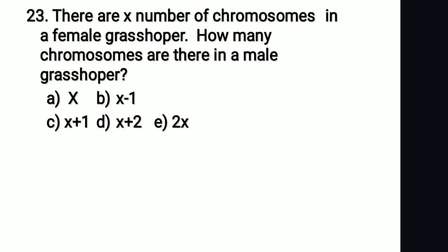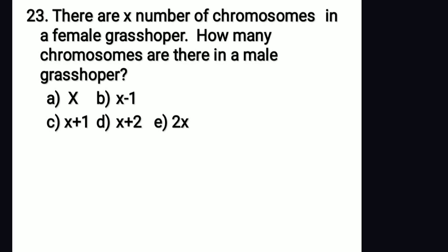There are X number of chromosomes in a female grasshopper. How many chromosomes are there in a male grasshopper? The right answer is option B: X minus 1. The XO sex determination mechanism is seen in insects; females have XX chromosomes and males have only one X chromosome.